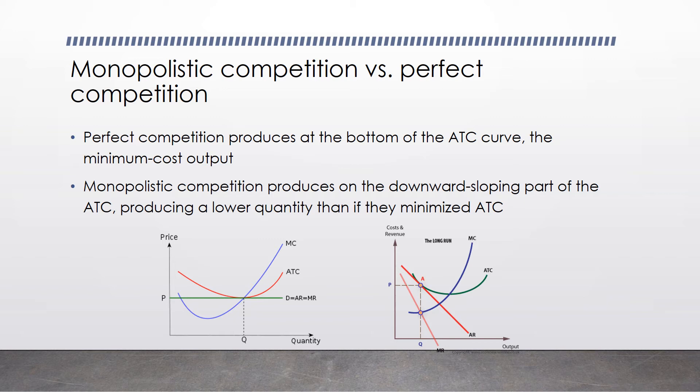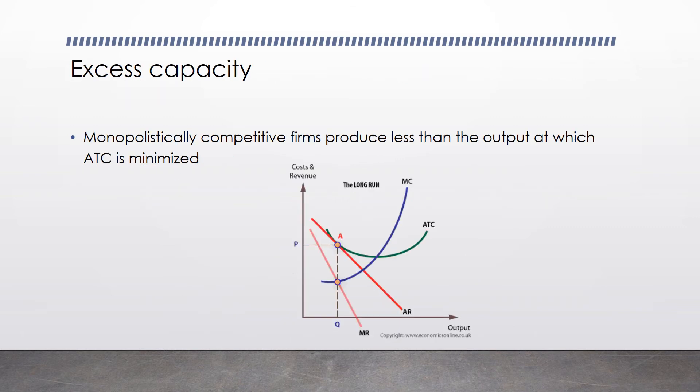Because they don't produce a large enough quantity, they end up on the downward sloping ATC curve — meaning that if they produced more, their average total cost would continue to decrease, but they don't produce enough. The term for that is excess capacity. Monopolistically competitive firms produce less than the output at which average total cost is minimized, and that is an inefficiency that takes place in monopolistically competitive industries.